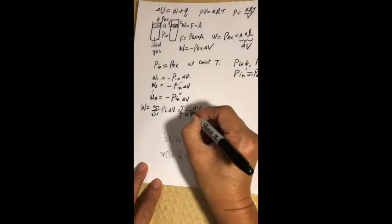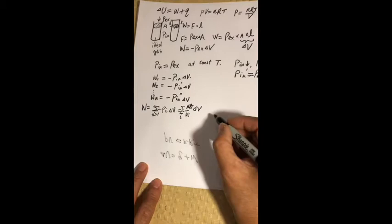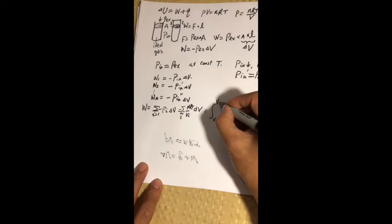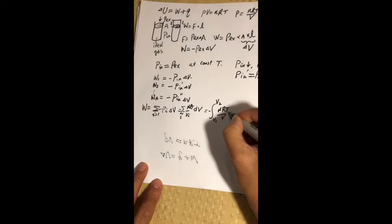Instead, we can still keep the summation, but the Pi would be Vi over nRT. We still keep the negative sign in front of it. But if you sum over a lot of tiny steps, this is virtually an integration from volume one to volume two, minus nRT over dv.